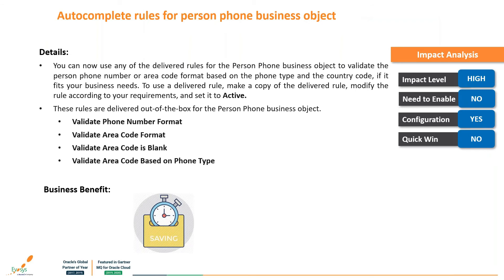We have autocomplete rules for person phone business objects. In this release, we have out-of-the-box rules for validation such as phone number formats, area codes, and validating area based on phone type. This is very useful in businesses spread geographically across continents, where each country may have different requirements for area and phone format. This out-of-the-box validation function makes business flows very smooth.